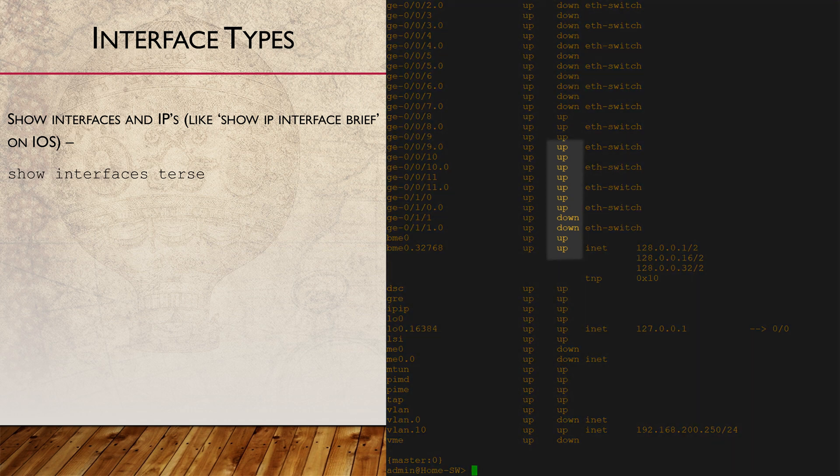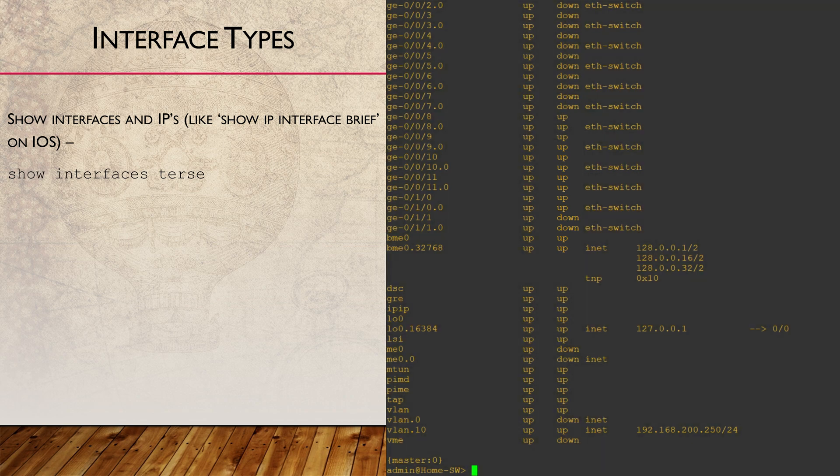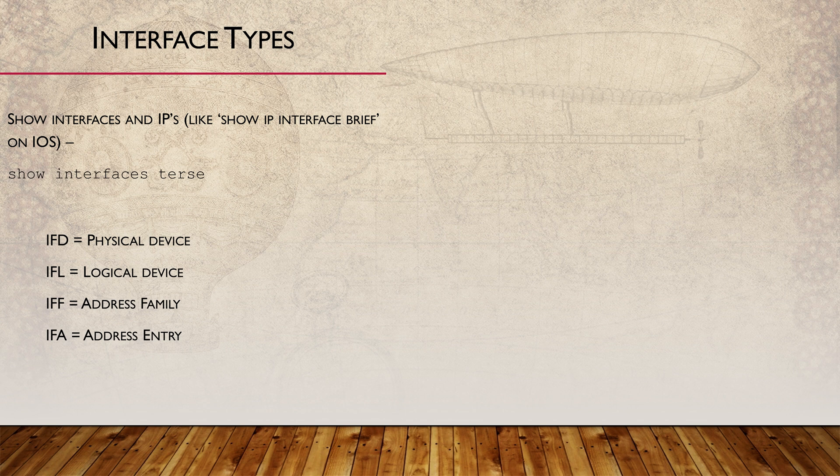Just like any other vendor, we can see if an interface is admin up or down and line up or down. Admin down means the interface has been manually disabled, while line down usually means there's nothing plugged in. Most of the interfaces we can see here are physical, also called IFDs.